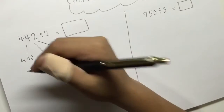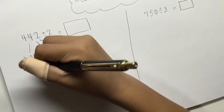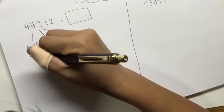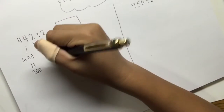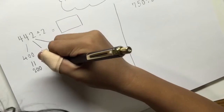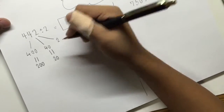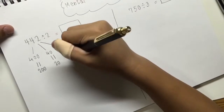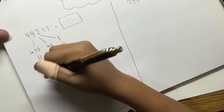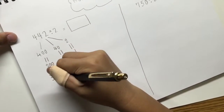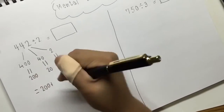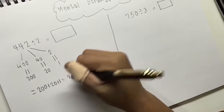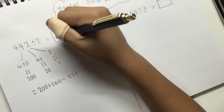So, 400 divided by 2 equals 200. And 40 divided by 2 equals 20. And 2 divided by 2 equals 1. So the answer equals 200 plus 20 plus 1, which equals 221.